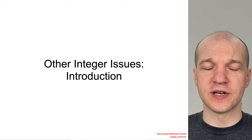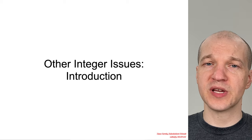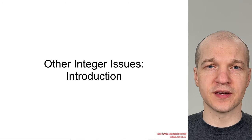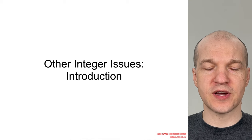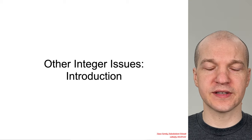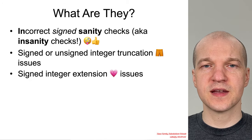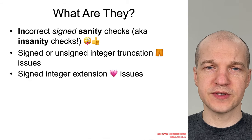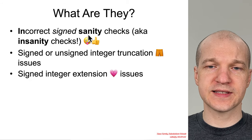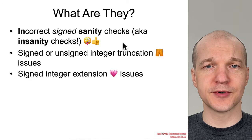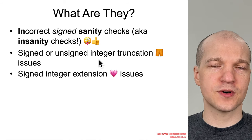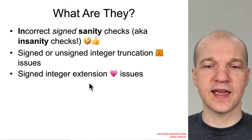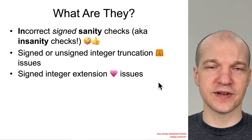While integer overflows and underflows are the big hitter issues that cause the most trouble, there are a bunch of other related integer issues that can also cause vulnerabilities to be exploitable. We're going to cover incorrect sanity checks — or insanity checks as I like to call them — signed or unsigned integer truncation, and signed integer extension.